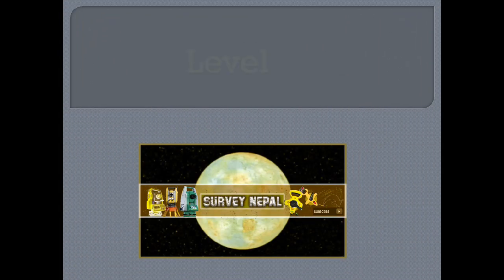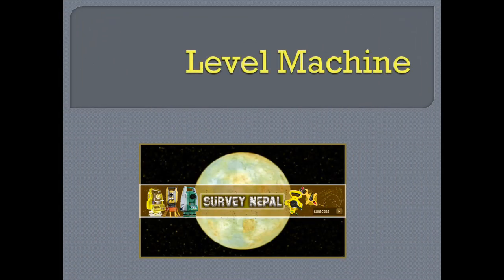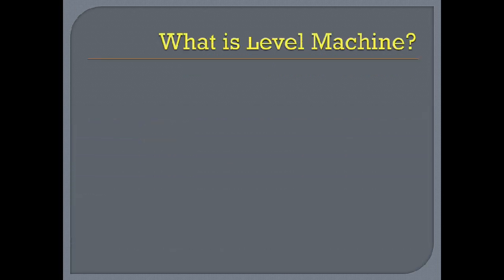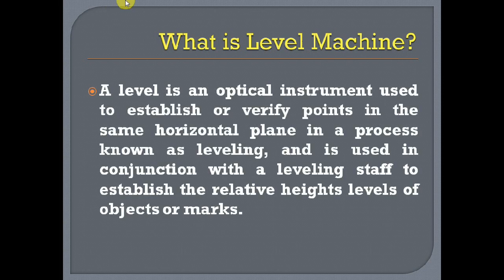Hello everyone, today I am going to show you a brief description, function, and uses of the level machine — how the level machine works. A level machine is an optical instrument used to establish or verify points in the same or general plane, in a process known as leveling.